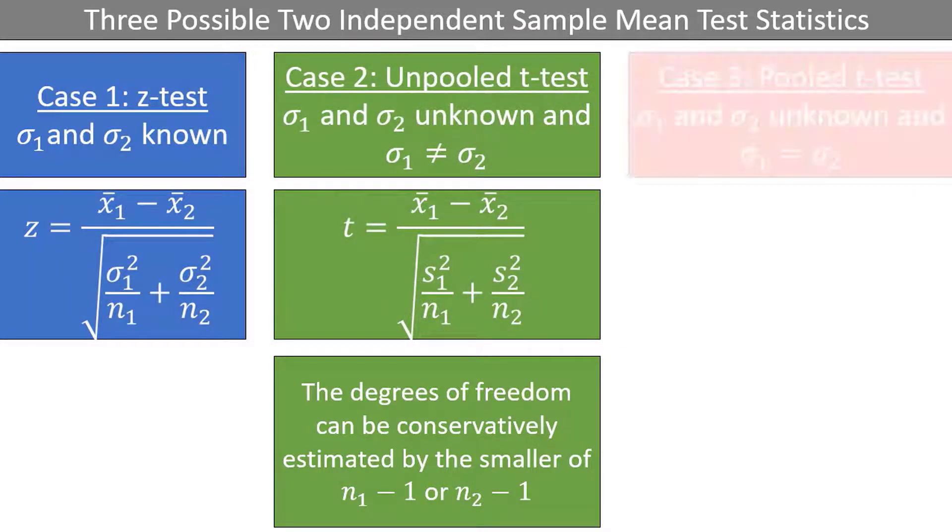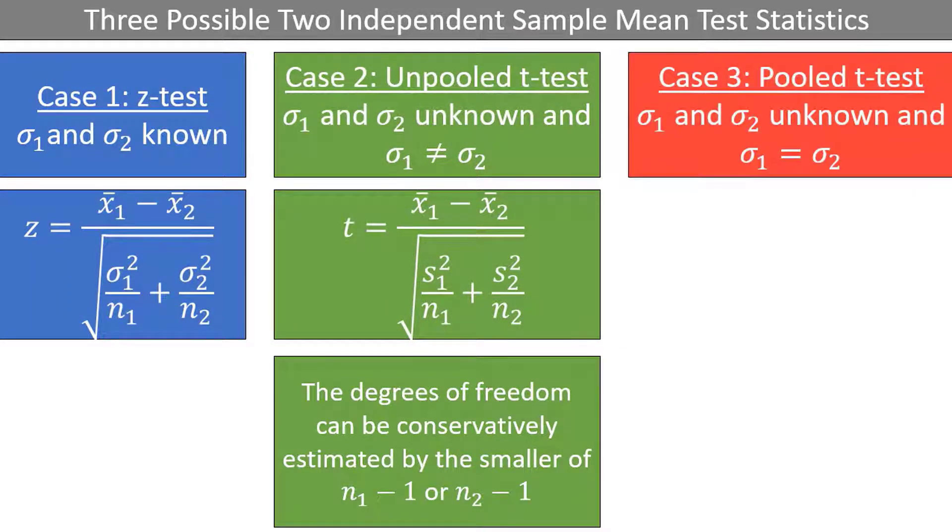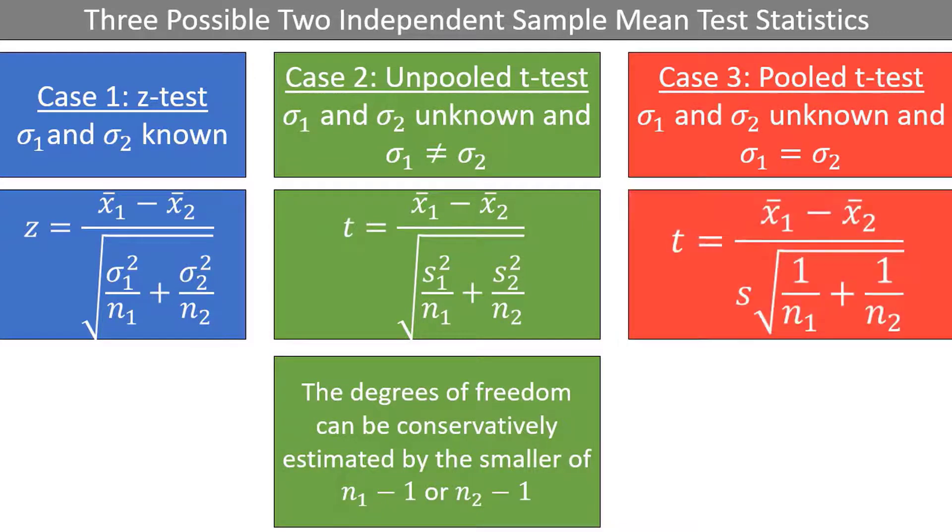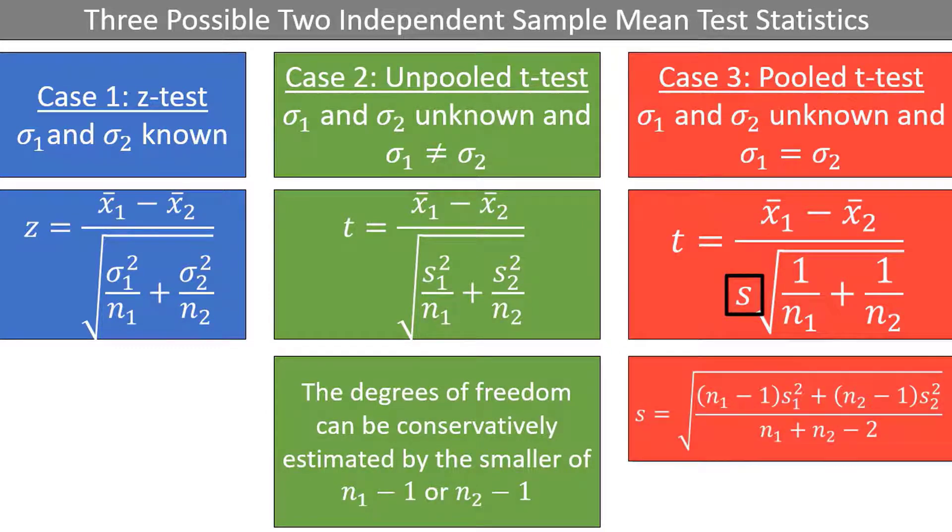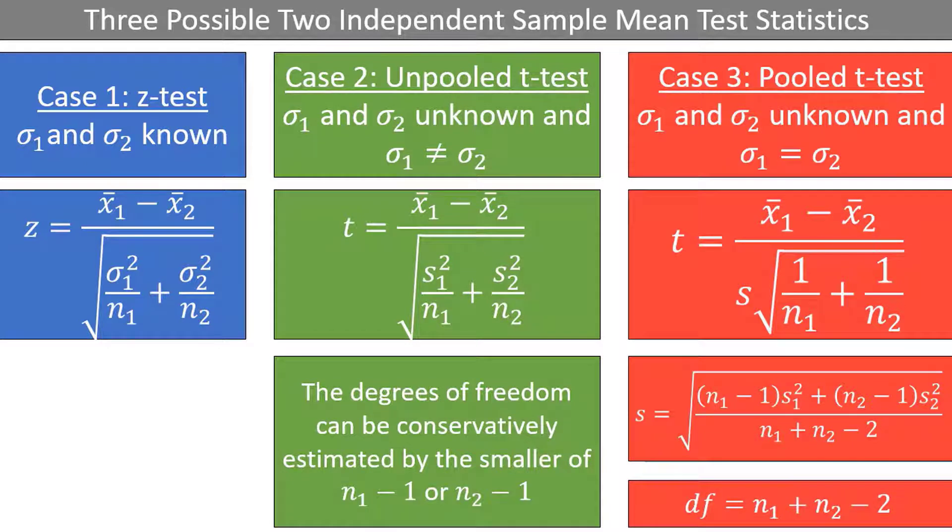Case 3 is the pooled t-test, which should be used when the population standard deviations are unknown but assumed to be equal. This can be verified with an additional hypothesis test, which we won't be covering in this video. Here is the test statistic. In order to use this procedure, you must calculate a pooled estimate for the standard deviation using this formula. The degrees of freedom in this case are n1 plus n2 minus 2.